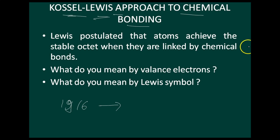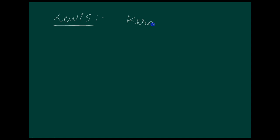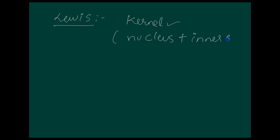Lewis postulated that atoms achieve the stable octet when they are linked by chemical bonds. Lewis pictured the atom in terms of a positively charged kernel — meaning the nucleus plus inner electrons — and an outer shell that could accommodate a maximum of 8 electrons. He further assumed that these 8 electrons occupy the corners of a cube which surrounds the kernel.